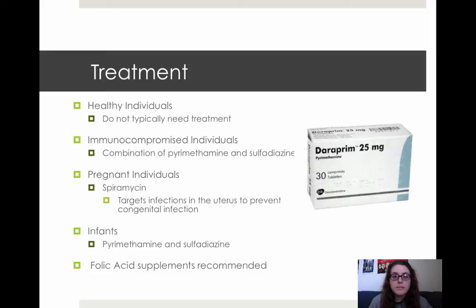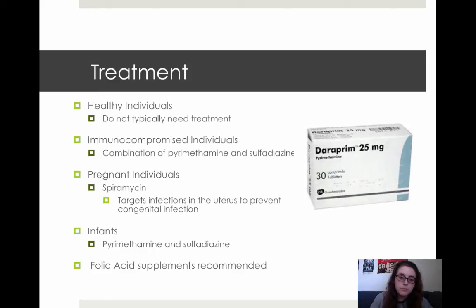Most healthy individuals don't need to be treated for this disease. The symptoms are very mild if they have them at all, and the immune system is fairly competent at suppressing them without the help of drugs. Immunocompromised individuals are typically given a series of antibiotics, mixing together pyromethame and sulfodiotsine, which work together to both eliminate symptoms and eliminate the parasite. Pregnant individuals are usually given spyromycine instead, as this specifically will target the uterus and prevent the infection from transmitting to the child, and the combination of the other two drugs often will cause complications for the pregnancy.